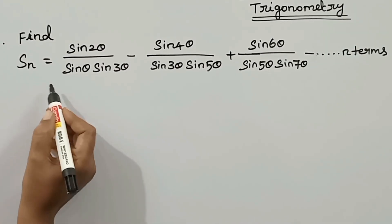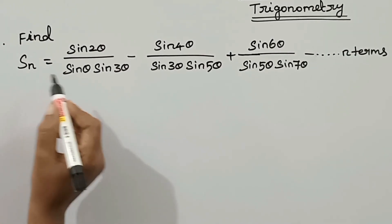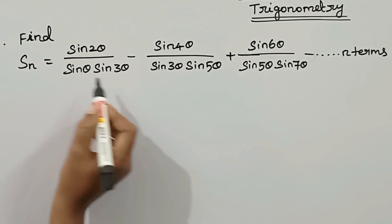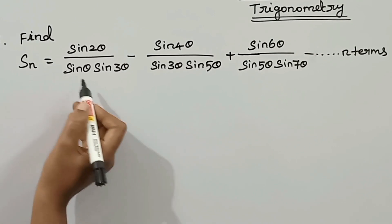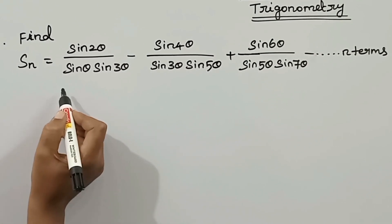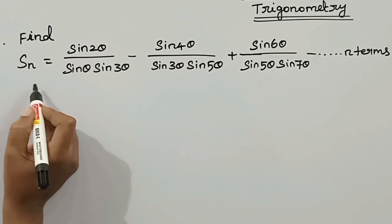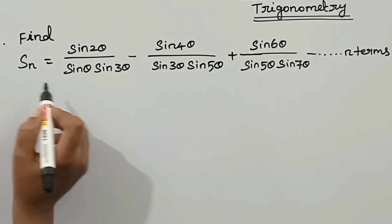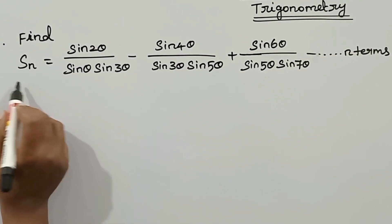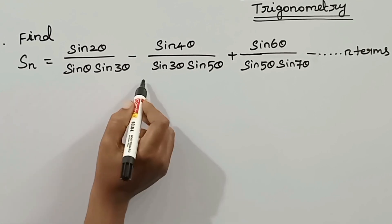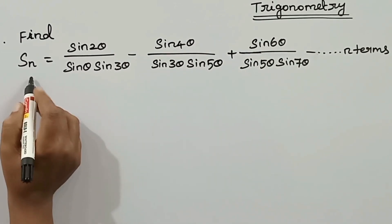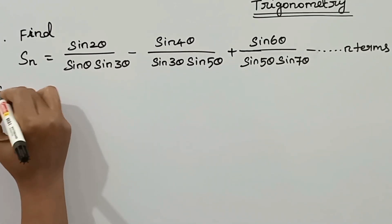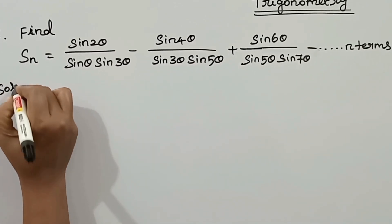Hello students. Summation of trigonometric series is the seventh problem. That is the difference method that we have discussed in this video. We will get a series of n terms and we will get a solution for this.